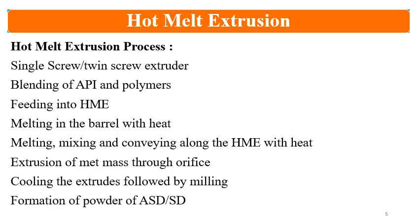The HME equipment may be single screw or twin screw. The process involves blending the API, polymers, and other additives, then feeding into the HME equipment and melting in the barrel with heat. The barrel has zones, and different zones have different temperatures. Melting and mixing occur, and the material is conveyed along the HME barrel and finally forced through the orifice. After cooling, hard glassy extrudates are formed, which are then milled into a powder called solid dispersion or amorphous solid dispersion — an intermediate for further processing.